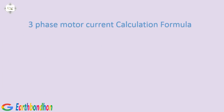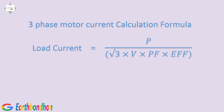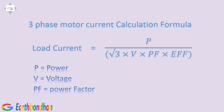Three-phase motor current calculation formula: Load current equals P divided by square root of three, multiplied by V, multiplied by PF, multiplied by EFF. Where P equals power, V equals voltage, PF equals power factor, EFF equals efficiency, and square root of three equals 1.73.